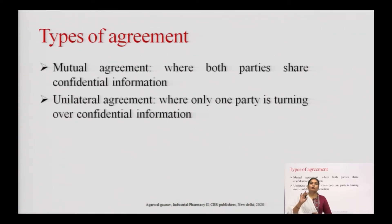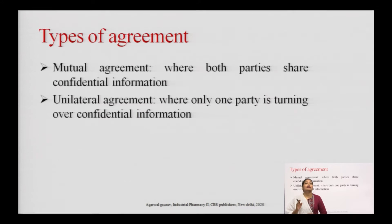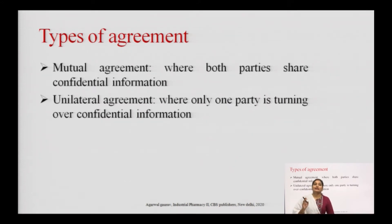In the mutual agreement, both parties are mutually involved and will share the confidential information. But in the case of a unilateral agreement, only one party is turning over the confidential information.